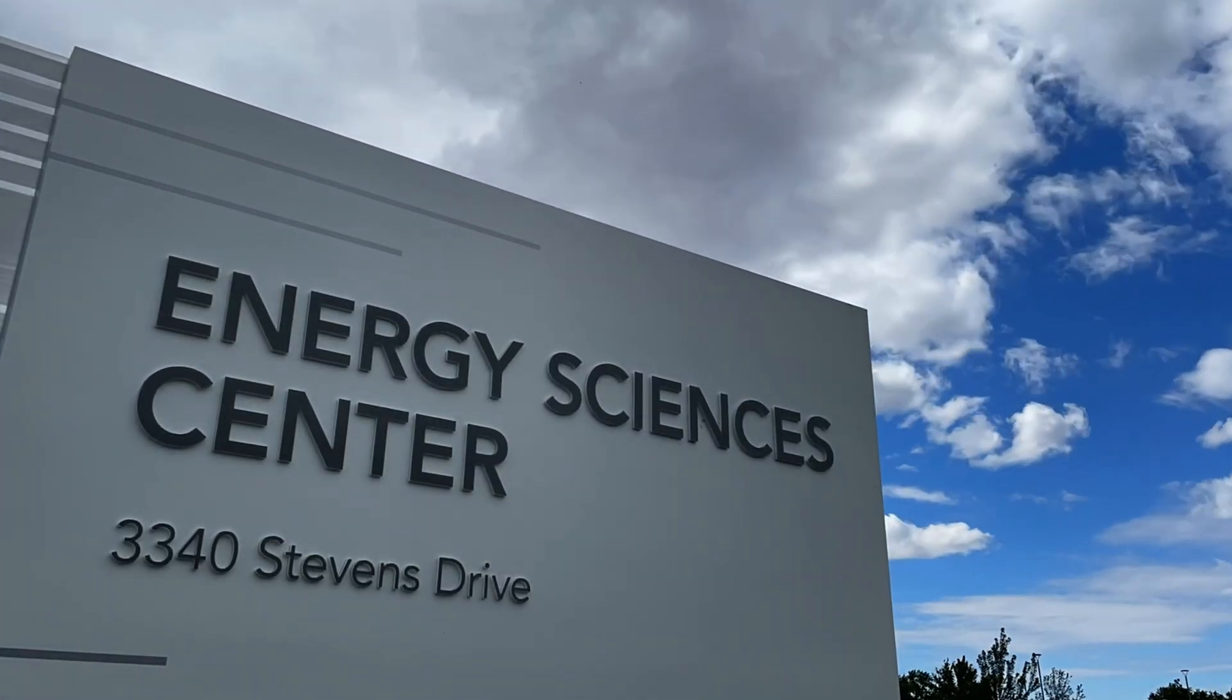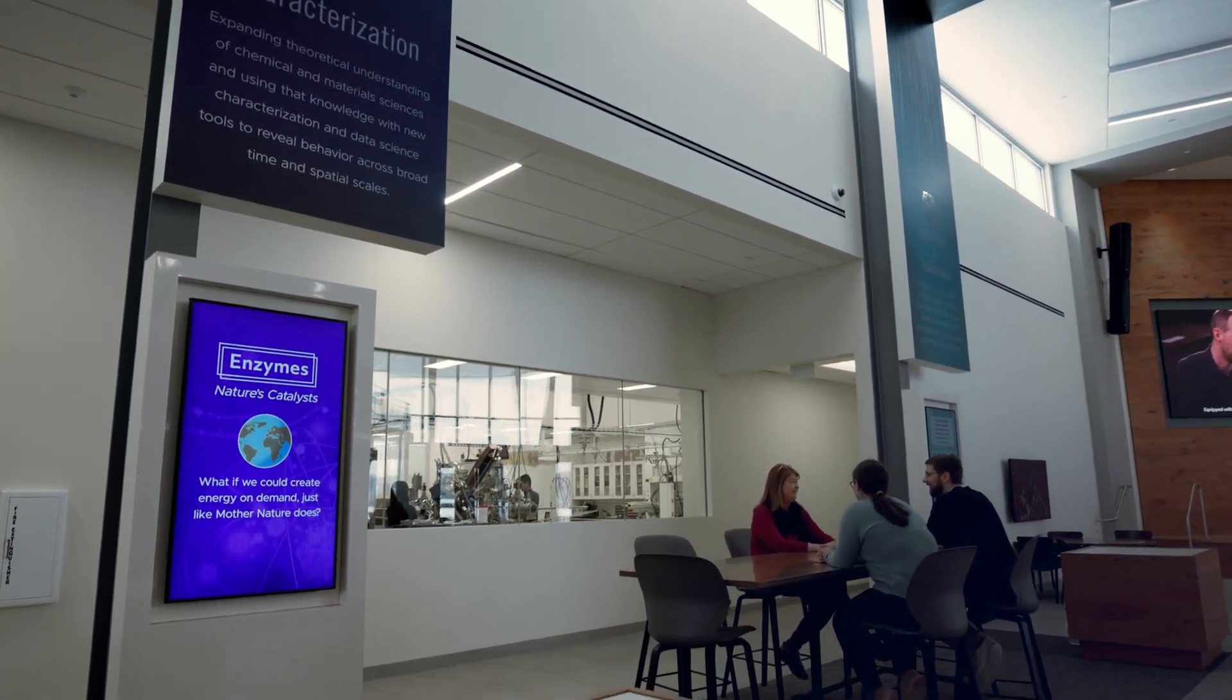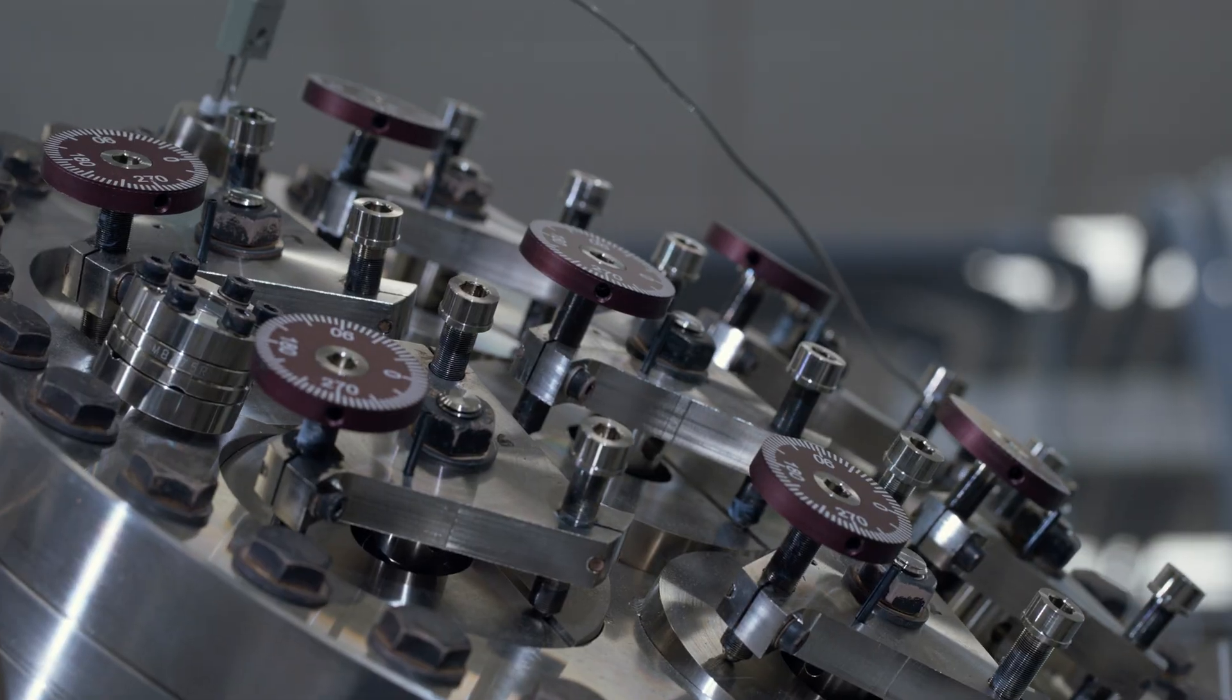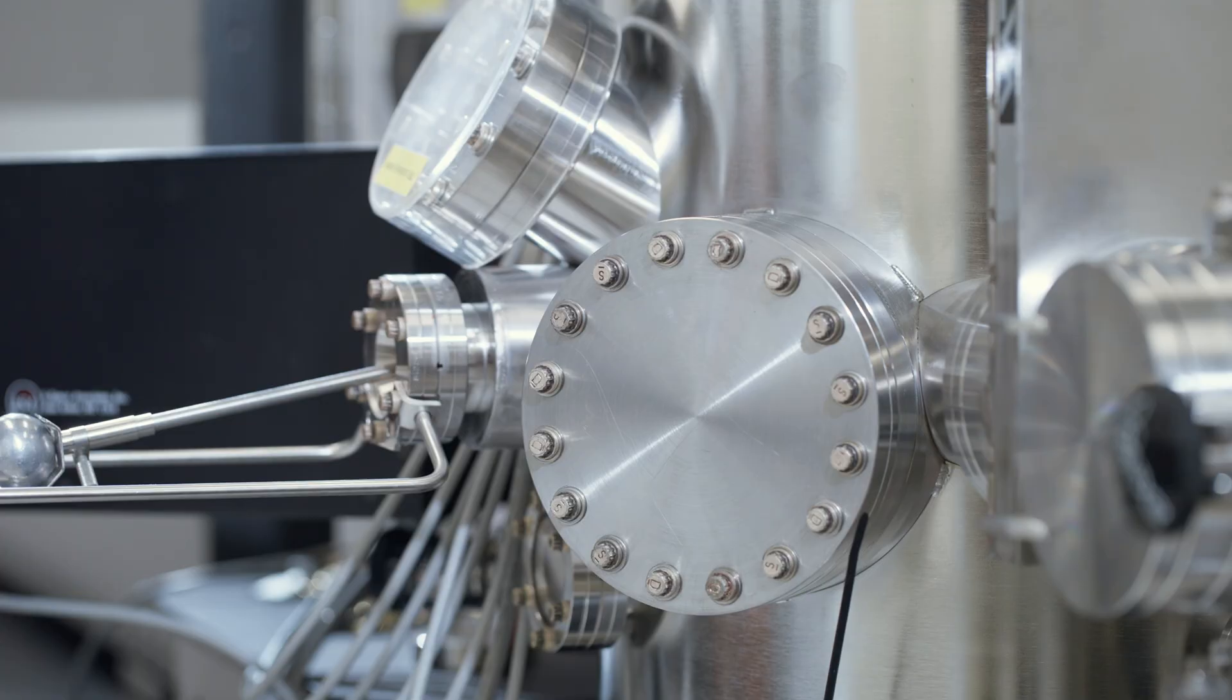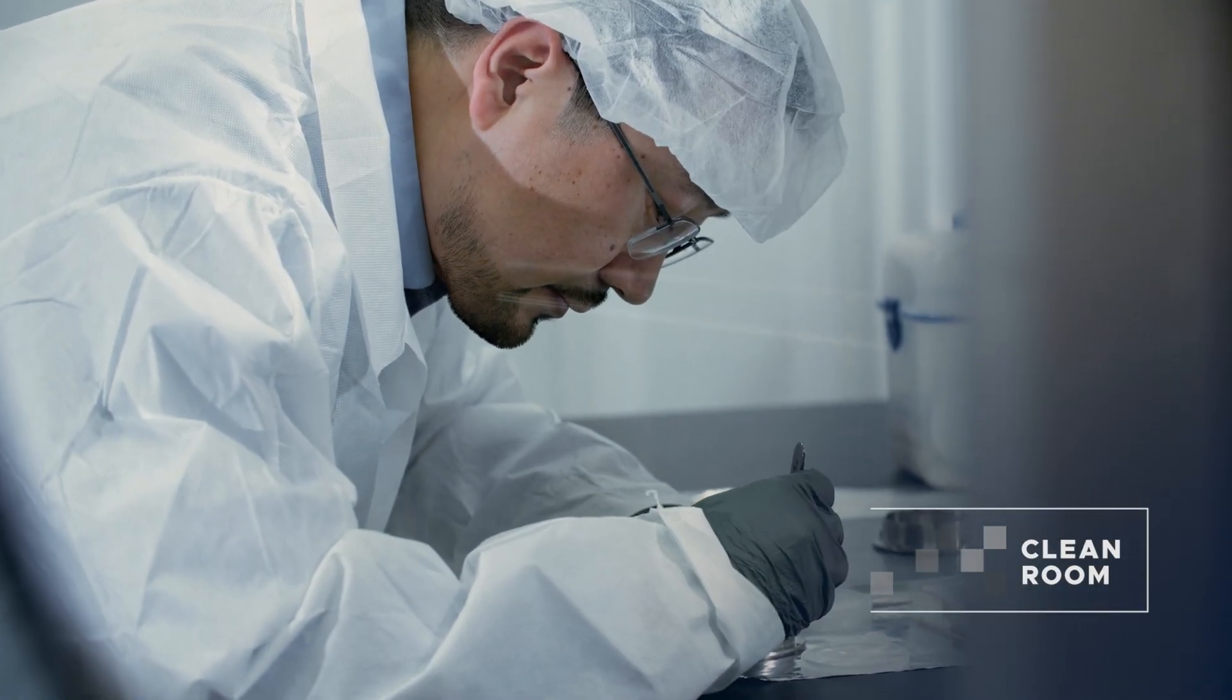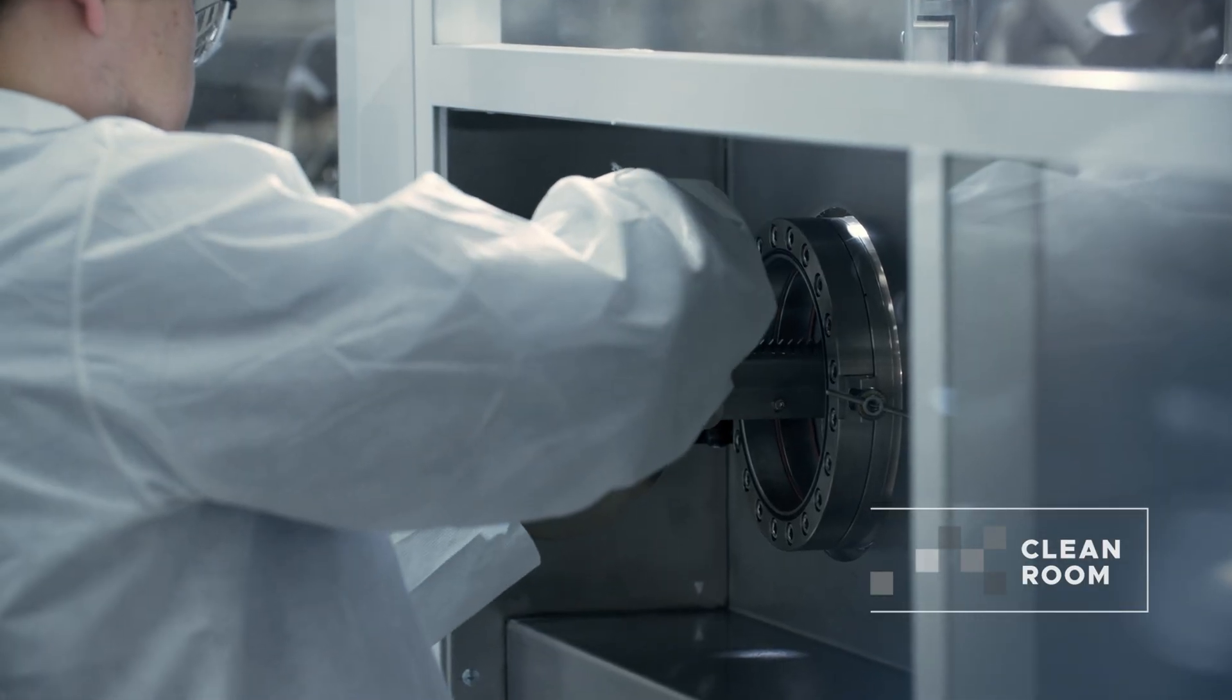Housed in the Energy Sciences Center, the team uses a custom-built MBE instrument to make ultra-thin films of different metals combined with oxygen, atom by atom. The laboratory's new clean room keeps things like dust away from the pristine crystal that acts as a template for the growing films.